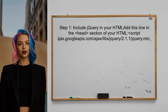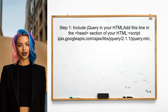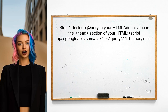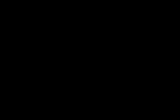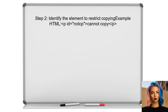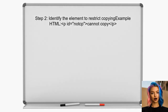To disable copying for a specific element while allowing other elements to be copied, first ensure you have jQuery included in your HTML — this is essential for the jQuery function to work. Next, identify the element you want to restrict copying for. In this case, it's the middle element. You can do this by assigning an ID to that element.